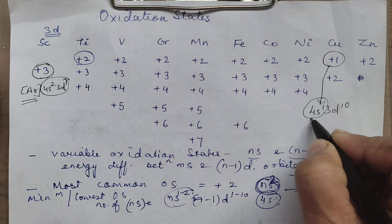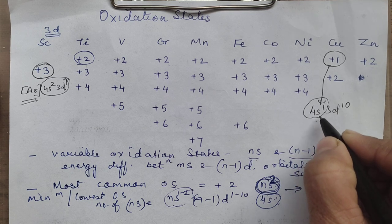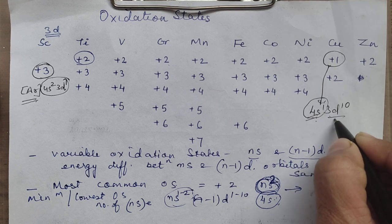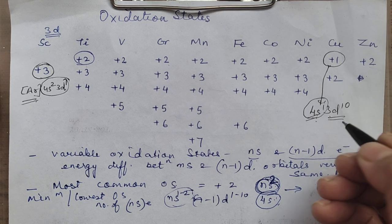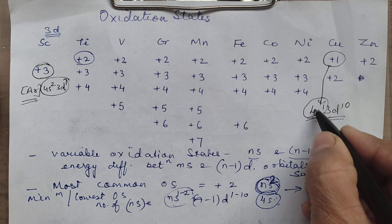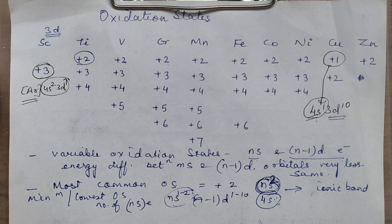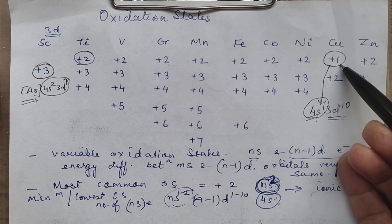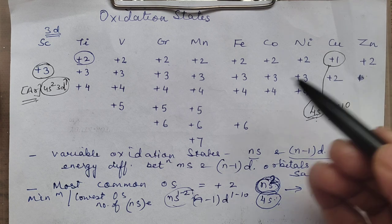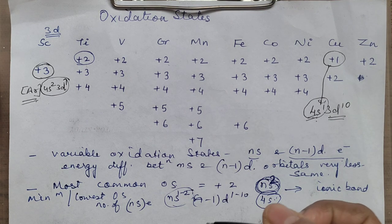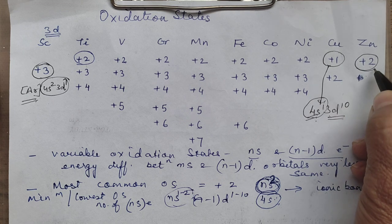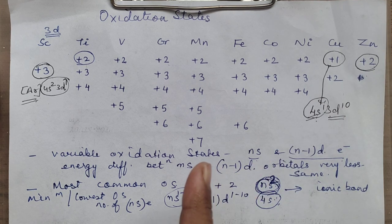Copper has only 1 electron in Ns (4s). This electron can participate in bond formation, and since it has 3d10, it prefers allowing only that Ns electron to participate. Hence the lowest oxidation state in copper is +1. Another important point: zinc exhibits only one oxidation state, whereas most D block elements exhibit a large number of oxidation states.